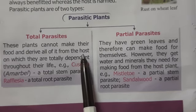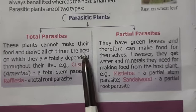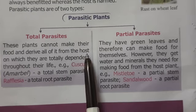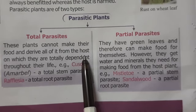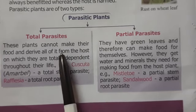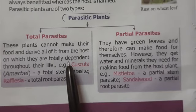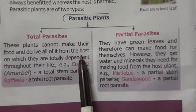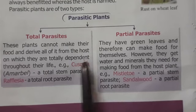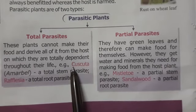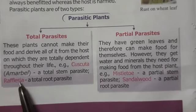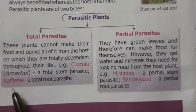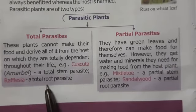The host is the organism from which the parasite takes food. Total parasites are fully dependent on the host for their food and cannot prepare their food at all. Examples are Cuscuta — in Hindi called 'amarbe' — which is a stem parasite, and Rafflesia, which is a root parasite.